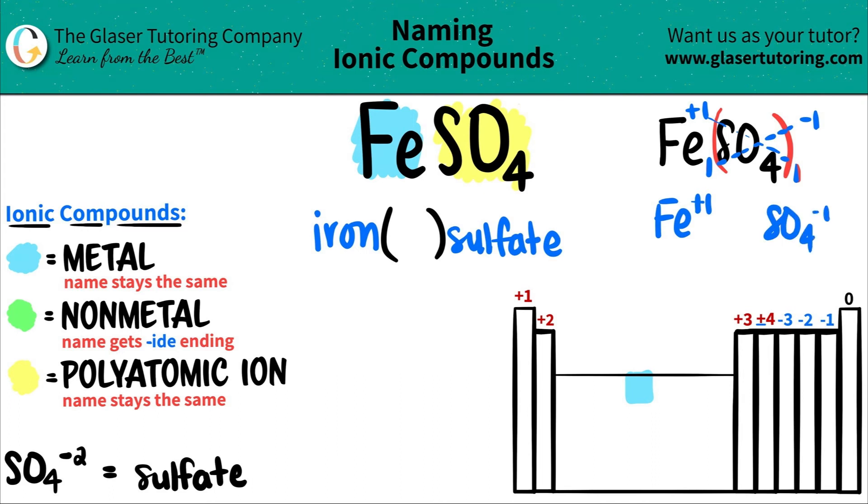So I have +1 for iron and -1 for SO4. But always double check - does this make sense? I know sulfate always has a -2 charge, so I need to turn this -1 into -2. I can multiply by two: -1 times 2 equals -2. But whatever I do here, I have to do to the iron. So I multiply that by two as well, and iron's true charge is +2.